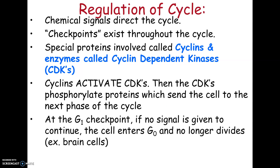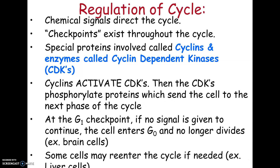At G1, there's a checkpoint. If no signal is given to go past that checkpoint, cells will enter what's called G0 — brain cells, for example, would be in G0. A cell in G0 still does all the normal jobs of a cell, but it's never going to move forward through the rest of the cell cycle toward cell division. Some cells do have the ability to enter and leave the cycle as needed — liver cells, for instance, live a very long time and wouldn't normally be dividing, but if the liver were damaged, those cells could be stimulated to go back from G0 into G1, into S, G2, and so on.